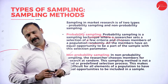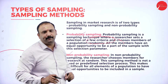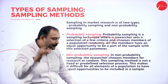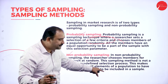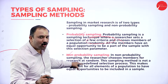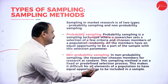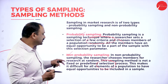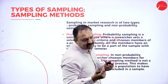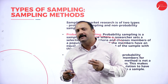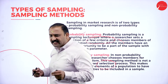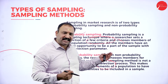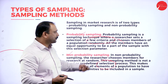Under non-probability sampling, the researcher chooses members for the research at random and the sampling method is not fixed or predefined — it is on a random basis. This is more difficult because ensuring all elements of the population have equal opportunity to be included in the sample is challenging. Constructing a complete non-probability sampling framework is even more challenging compared to probability sampling.